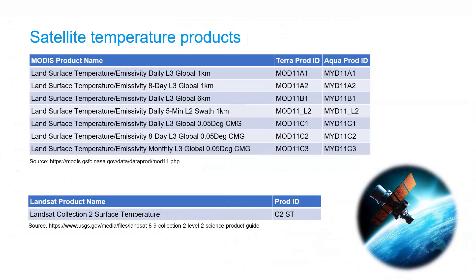Sometimes it's much easier to use a ready-made satellite temperature product instead of processing thermal infrared images yourself. MODIS has several products at different spatial and temporal resolutions available for you, as you can see in this table. Also Landsat has a Landsat Collection 2 surface temperature product.